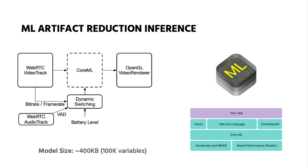We chose Core ML because we were expecting better performance due to its hardware acceleration support, and because we don't need to distribute it with our app — you get it for free. We converted our model from TensorFlow to Core ML and integrated it into our WebRTC application. Typically in a WebRTC application you have a video track providing frames to an OpenGL video renderer; we put our Core ML model in the middle so that frames are pre-processed before being shown to users. We also envisioned a dynamic switching model that, based on conditions like frame rate, voice activity detection in multi-party rooms, device type, and battery level, would enable and disable this pre-processing.